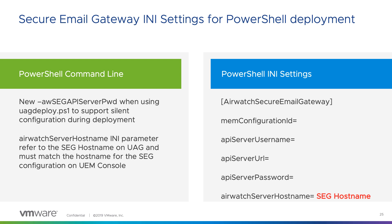When deploying Unified Access Gateway using PowerShell and wanting to enable Secure Email Gateway, a couple of INI settings were added. There's a new section called AirWatch Secure Email Gateway, which includes the manifest configuration ID from UEM console, the API server username, URL, and password, and the AirWatch server host name — which is really the SEG host name. There's also a new parameter on the UAG deploy.ps1 script — the AWSec API server password — allowing you to pass the API server password to deploy and configure Unified Access Gateway in silent mode, enabling automated deployment with Secure Email Gateway ready on first boot.